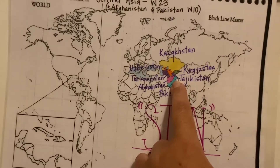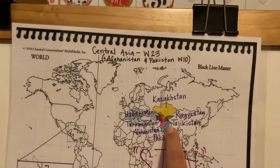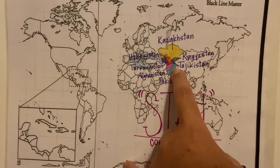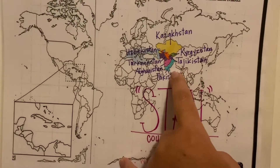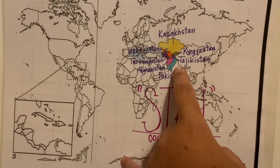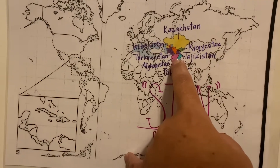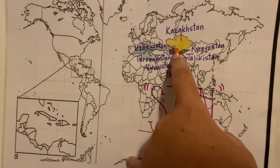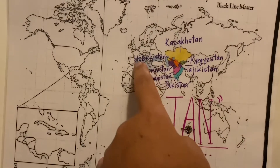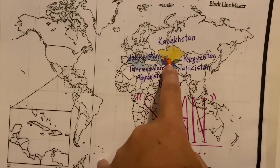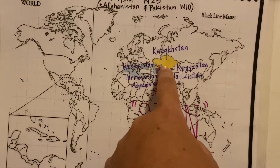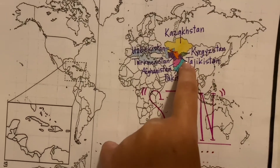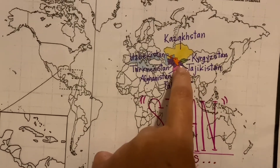Ready, Hazel? Show me Central Asia, a.k.a. the Stan countries. Pakistan, Afghanistan, Turkmenistan — this is the part where you get to ooh it up. Uzbekistan, Kazakhstan, Kyrgyzstan, Tajikistan.